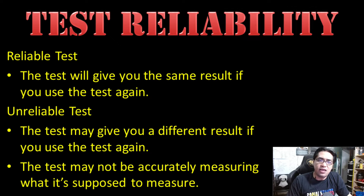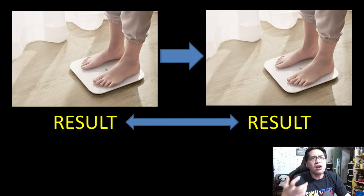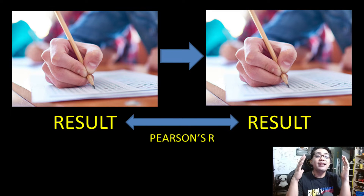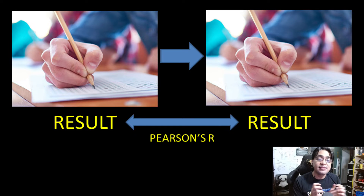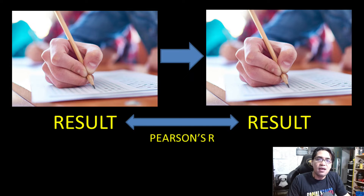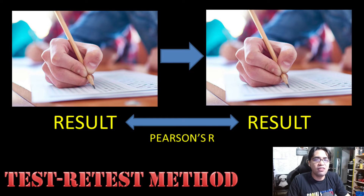Test reliability refers to the extent to which results are consistent across different occasions of testing. When a test is reliable, it will give you the same result if you use it again. When it's not reliable, it may give a different result. The first method of measuring reliability mirrors the weighing scale example: administer the test, wait a bit, then administer it again. Compare the results using Pearson's R. If the results are similar, the test is reliable. This is commonly known as the test-retest method.